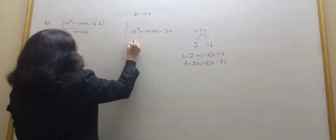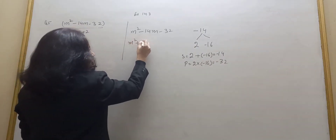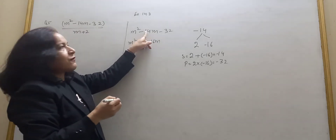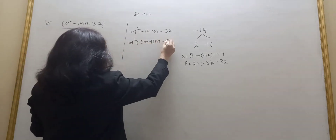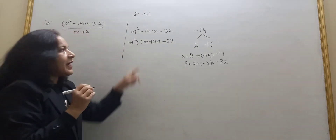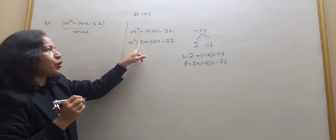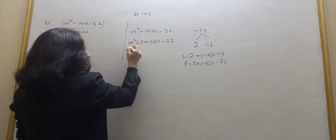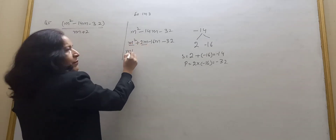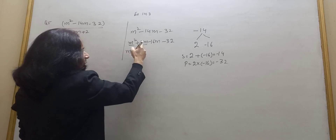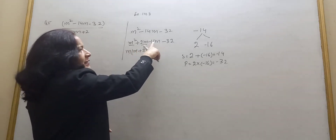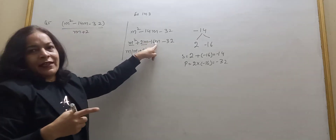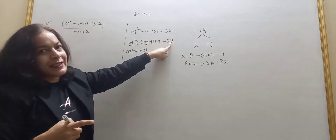So I will write this as m squared plus 2m minus 16m minus 32. Minus 14 is split into plus 2 and minus 16. Now I can take m common from the first two terms, so inside we have m plus 2. And I will take minus common from the last two terms — minus 16 common.